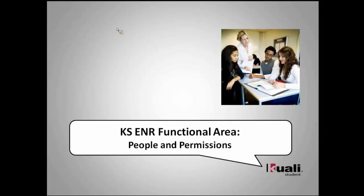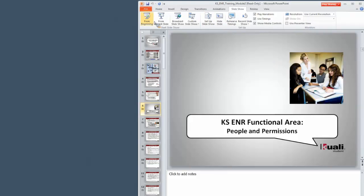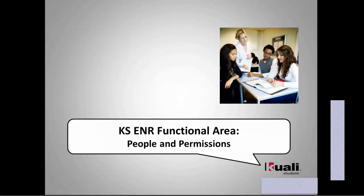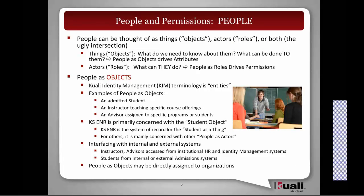Handing it over to Steve and Ruth to talk about people and permissions. People can be thought of as things, which we sometimes refer to as objects, or actors, sometimes referred to as roles, or both — which is the intersection between the two. Things or objects relate to what we need to know about them, what are the data attributes, and what can be done to them. So people as objects help derive attributes which we'll get to when we talk about permissions.